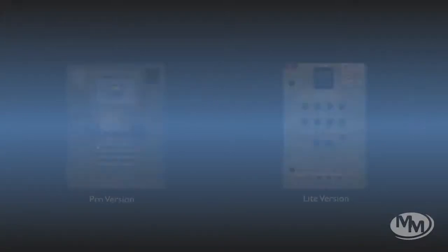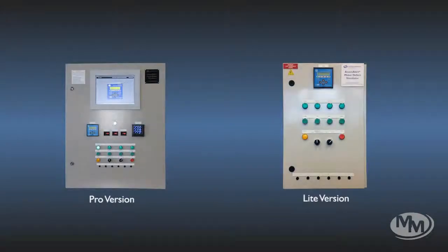The main differences between the Pro and the Lite version of the Anomalert Motor Defect Simulator is that the Pro version features a built-in industrial PC running an Anomalert server. The Lite version does not have a built-in PC.